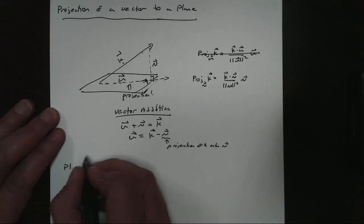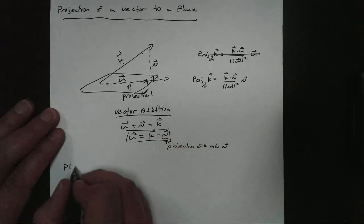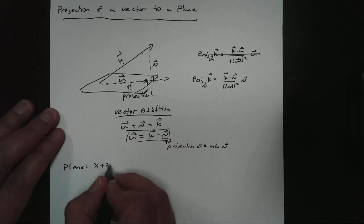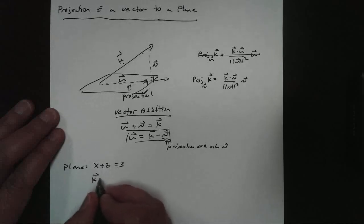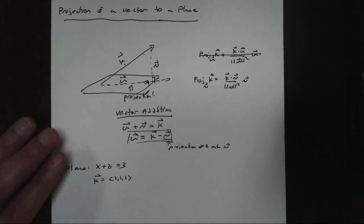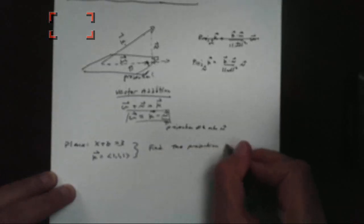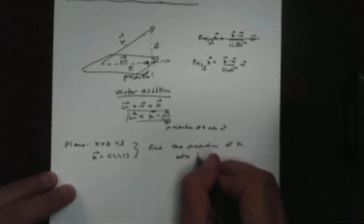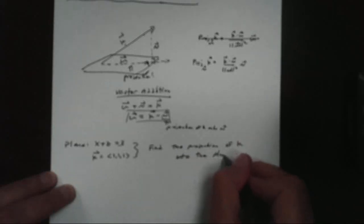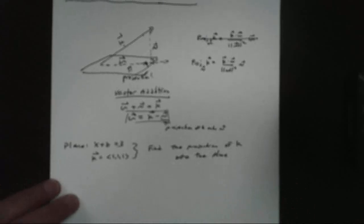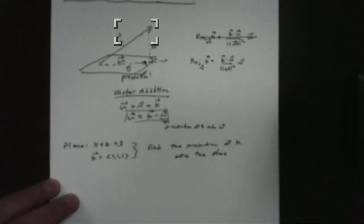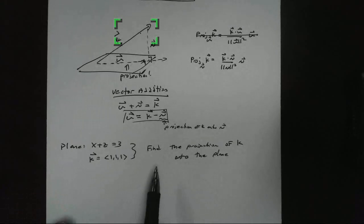So let's get started with an example. Let's say we have a plane given by the equation x plus z equals 3, and we have vector K which is given by (1, 1, 1). What we want to do is find the projection of K onto the plane. Since the plane is represented by vector U which is unknown, we can't find it directly. So what we're going to do first is find the projection of K onto our normal vector N.